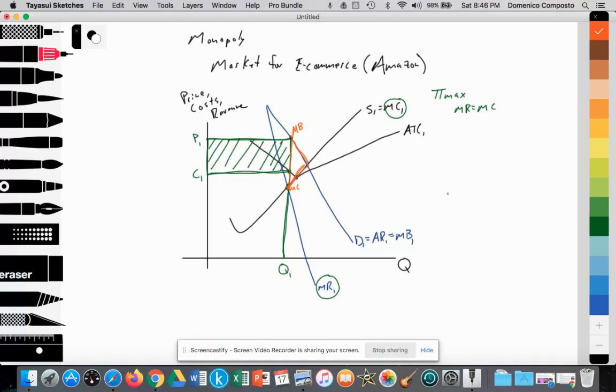We also have a downward sloping demand curve labeled D1, which is equal to average revenue 1, which is equal to marginal benefit. We'll notice that the demand curve is inelastic, which provides that the monopolist can increase price to increase their total revenue.